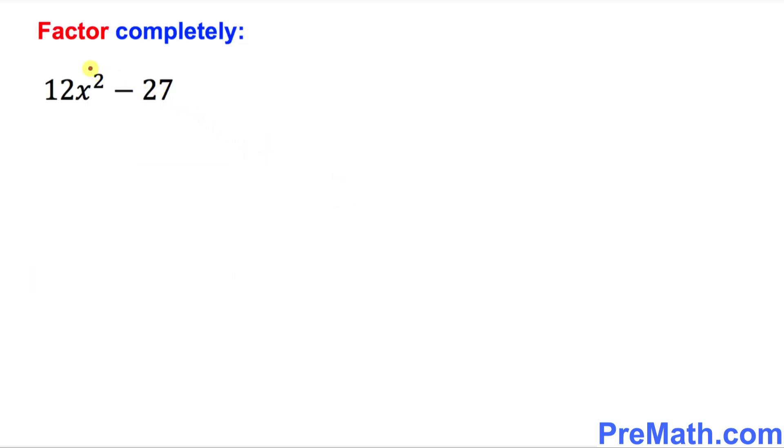Let's look at the very first example. We want to factor this expression completely. The very first thing I want you to focus on is 12 and 27. What are the common factors? The common factor between these is 3, and by the way, this 3 is also called GCF or simply greatest common factor.